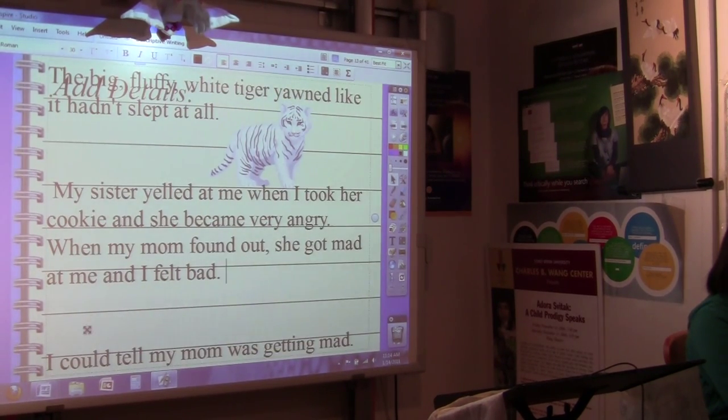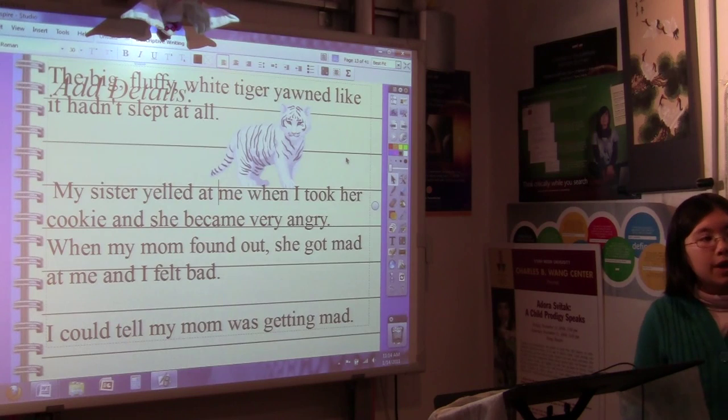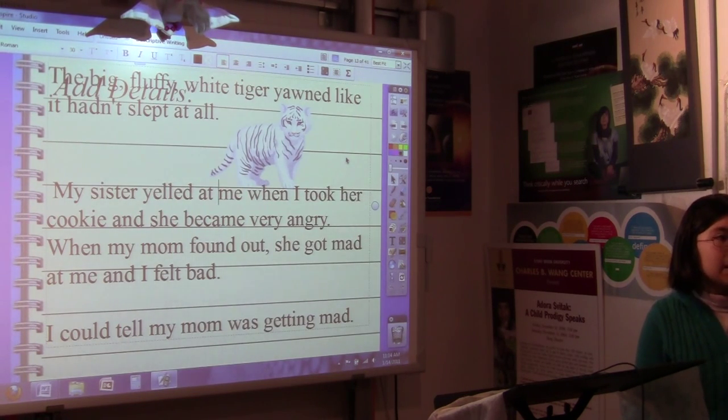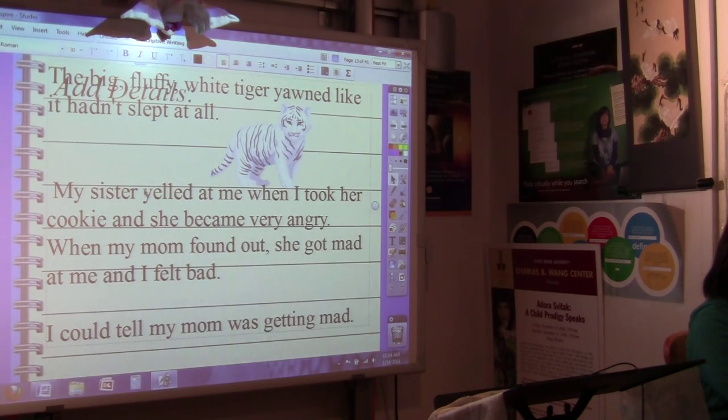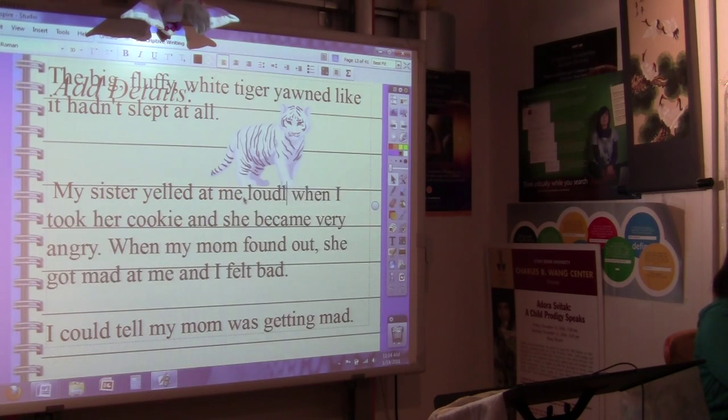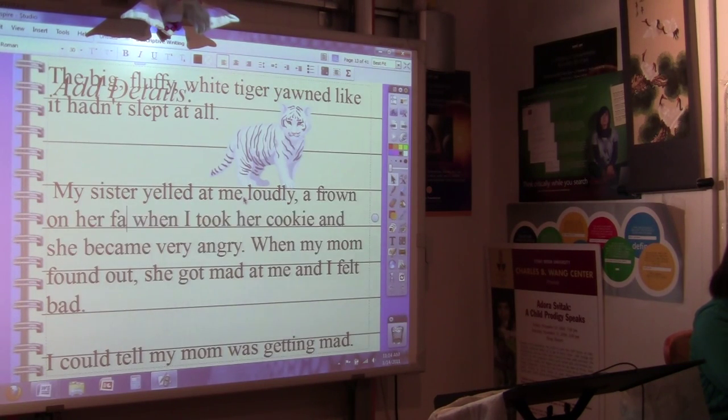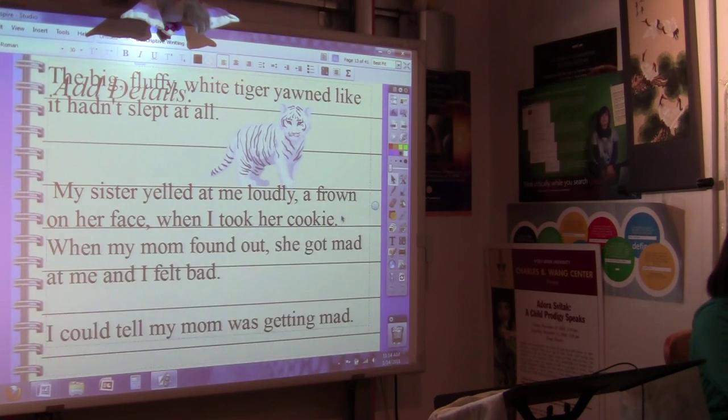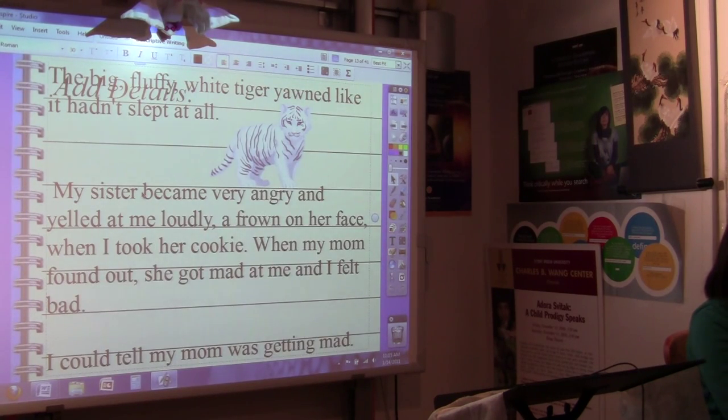So how might we add also some descriptive details about appearance? For instance, when we said the fluffy white tiger, what did your sister look like? Was she really frowning hard? Was she raising her voice? She was really frowning hard. Yeah, she was raising her voice. Okay, yelled at me loudly, frowning, maybe a frown on her face when I took her cookie. When you say something like, my sister yelled at me loudly, a frown on her face, you can put maybe, my sister became very angry and yelled at me loudly, a frown on her face when I took her cookie. When my mom found out, she got mad at me and I felt bad. This sentence might be a little long. So as you're going through with adding descriptive details, you can edit more, you can separate it in different sentences.